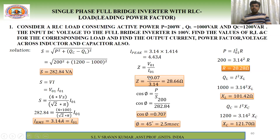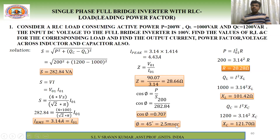The impedance Z = V01/I01. V01 = 4×100/(√2·π) = 90.07 V, and I01 = 3.14 A, giving Z = 28.66 Ω. Power factor cos φ = P/S = 200/82.84 = 0.707, so φ = 45°, which corresponds to 2.5 milliseconds.